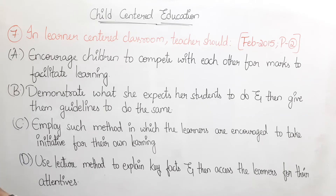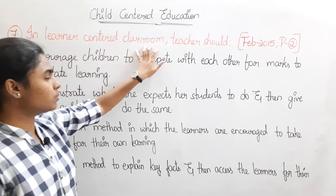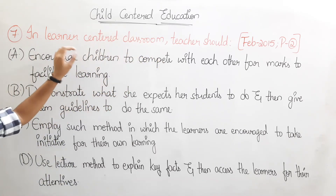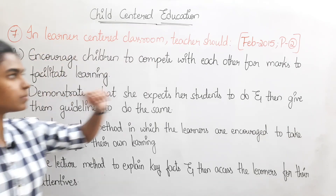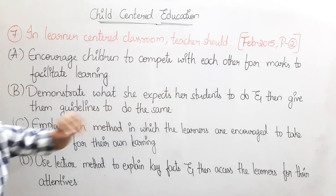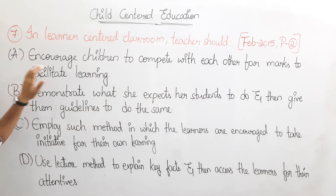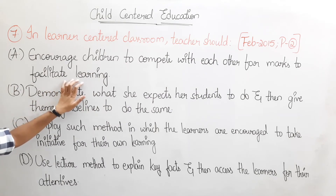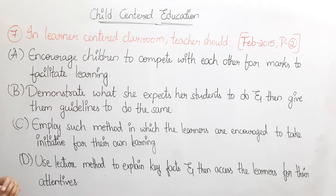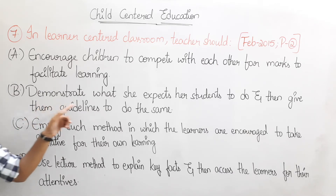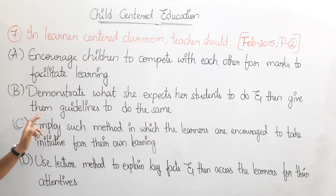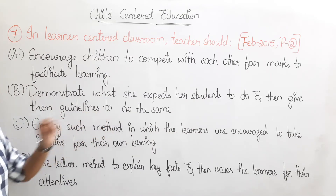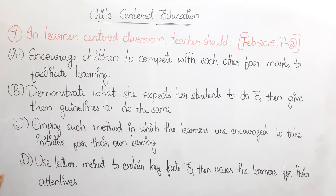The seventh question is: in a learner-centered classroom, the teacher should do what? This question is from February 2015, Paper 2. Option A: encourage children to compete with each other for marks to facilitate learning. Option B: demonstrate what she expects her students to do, and then give them guidelines to do the same.